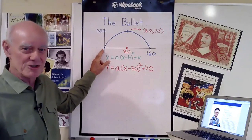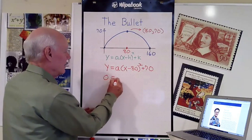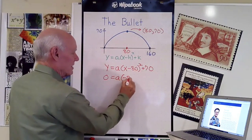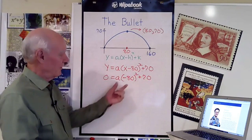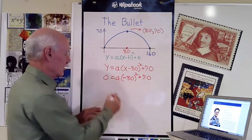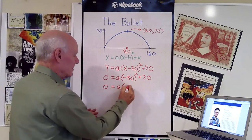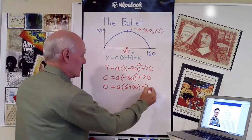When x equals zero and y equals zero, we have 0 equals a times (0 minus 80), which is negative 80 squared plus 70. If I square 80, I get 6400. So a times 6400 plus 70.